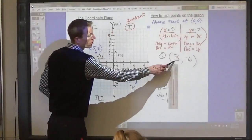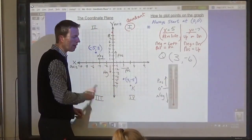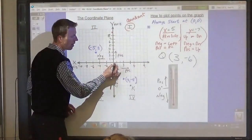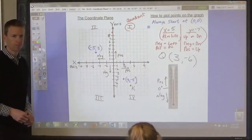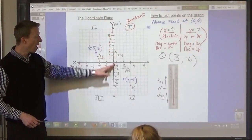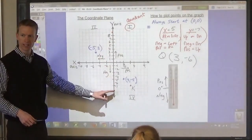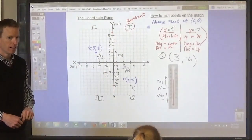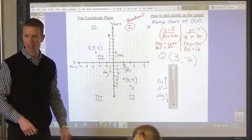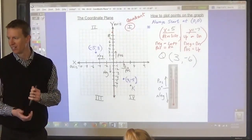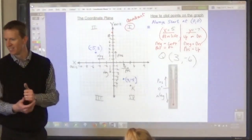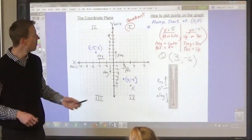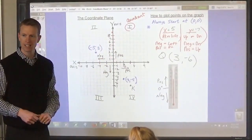The first number tells you how far to go right or left. If it's positive 3, it means start at 0 and move 3 to the right. Then, on the y-coordinate, the y-coordinate tells you how far to go up or down. If it is below 0, it is a negative number. If it's above 0, it's a positive number.